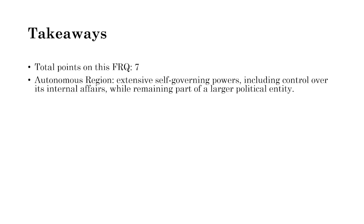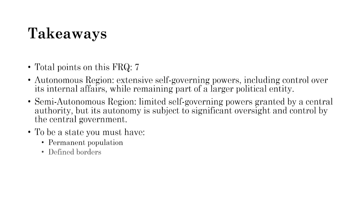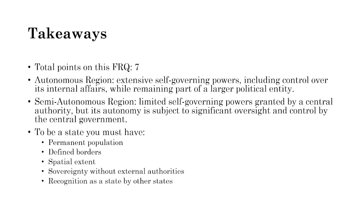A semi-autonomous region has very limited self-governing powers, and any authority is granted and monitored by the central government, with autonomy subject to significant oversight — Native American reservations are a good example. To be a state, you must have a permanent population, defined borders, spatial extent, sovereignty without external authorities, and recognition as a state by other states.